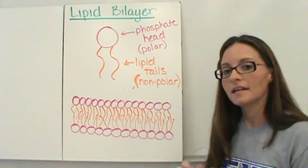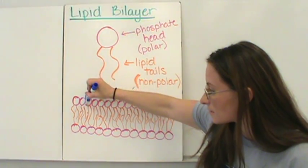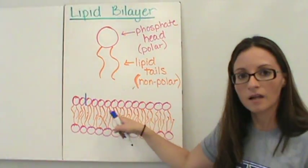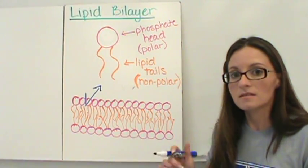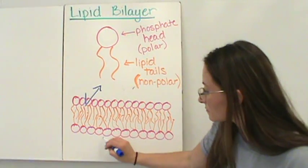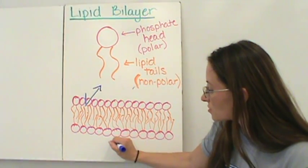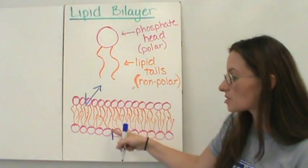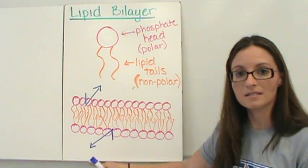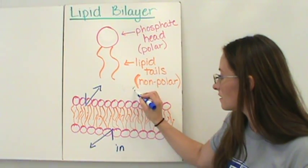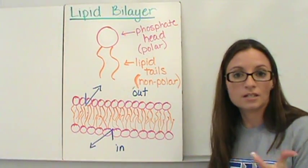Here's why: anything that is a polar molecule will be able to make it through the outer phosphate head layer. But as soon as it reaches these non-polar tails, it's going to be kicked out — it's going to bounce off and not be able to make it into the cell. The same thing happens with something trying to get out of the cell. Water molecules or anything else that's polar will make their way through the polar heads, but will bounce off the non-polar tails and stay inside the cell. So nothing polar can really get through.